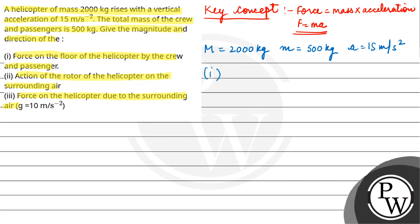So that means here on the helicopter floor, the mass will be only of crew and passengers. So mass m into, now the vertical acceleration is a plus acceleration due to gravity because both are in same direction vertically. So mass is 500, acceleration 15 plus 10. So this becomes 500 into 25 which is 12,500 newton.